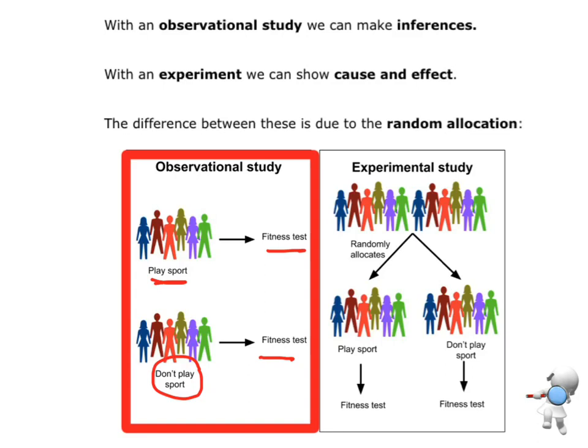Now I'm simply observing what I see or collecting observational data because the results could be due to underlying differences between the two groups themselves. We can't be sure that these groups, that the group of people who play sport and the group of people who don't play sport, we can't be sure that these two groups are similar.